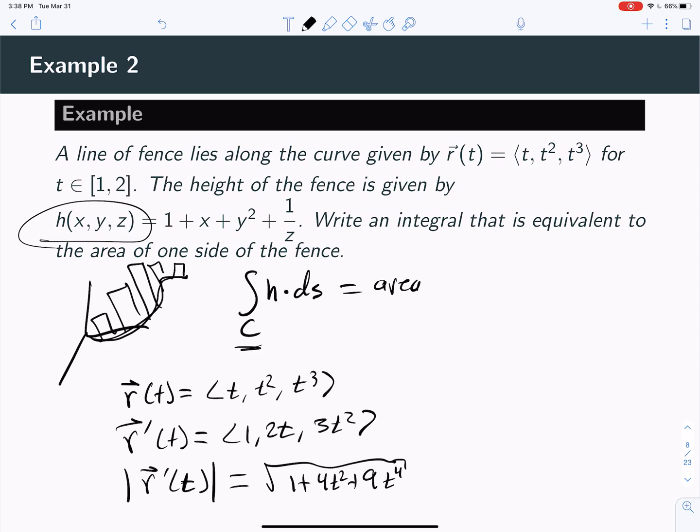And if you take that times dt, that'll be your ds. So there's going to be an integral now. I think it said t's go from 1 to 2, so t's go from 1 to 2. And I might need a little bit more room here. Let's erase this, give myself a little bit more space here.